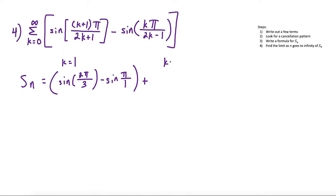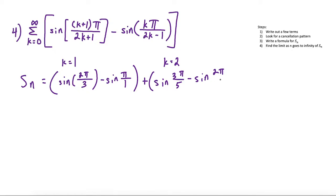Continuing to k equals 2, we have sine of 3π over (2·2 plus 1) = sine of 3π/5, minus sine of 2π over (2·2 minus 1) = sine of 2π/3. So here we have our first cancellation: sine of 2π/3 cancels with minus sine of 2π/3.